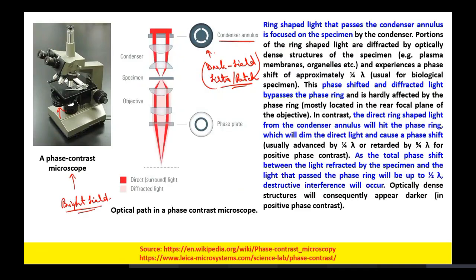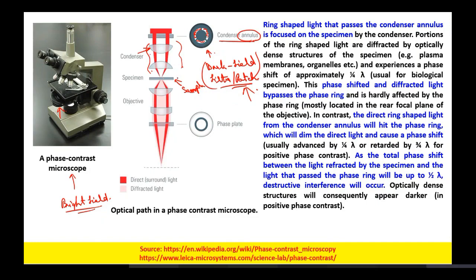The same principle applies in phase contrast. If you look at the condenser annulus, only the light from the annulus region enters the condenser. This condenser focuses the light onto the specimen. When the light interacts with the specimen, there are two possibilities.